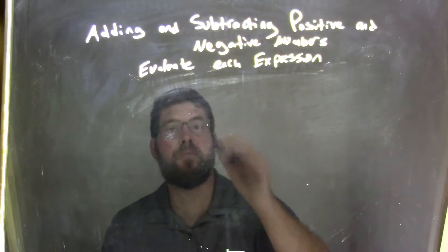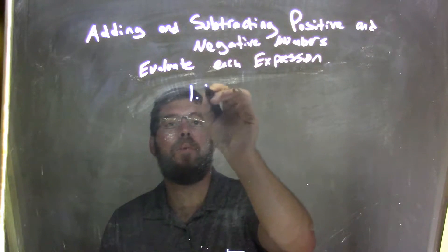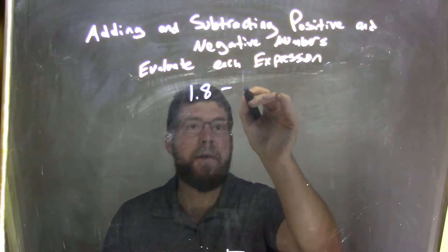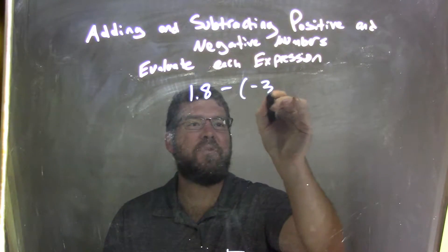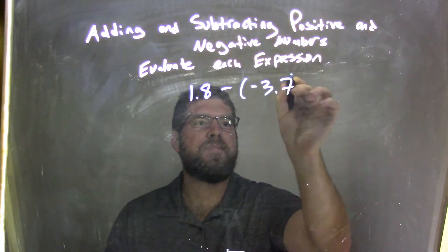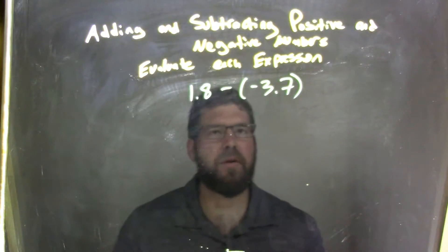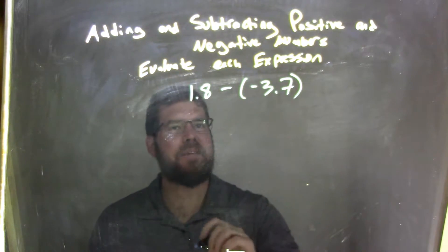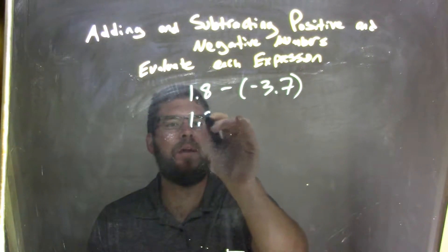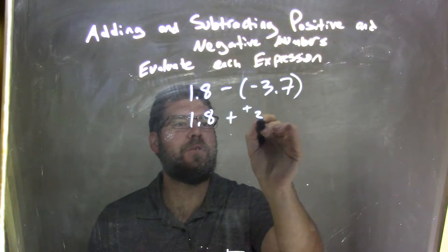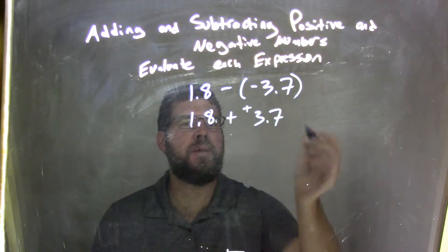So, if I was given this expression: 1.8 minus a negative 3.7. Well, 1.8 minus a negative 3.7 — that's the same thing as 1.8 plus a positive 3.7.